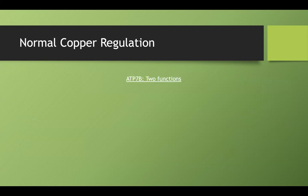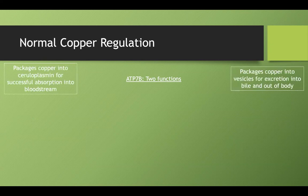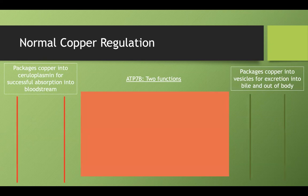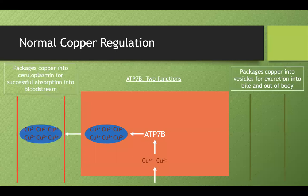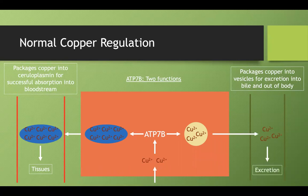In normal copper regulation, ATP7B packages copper into ceruloplasmin, which is released into the bloodstream and delivered to tissues that need copper. It can also package excess copper into vesicles, which are released into the bile and ultimately excreted.